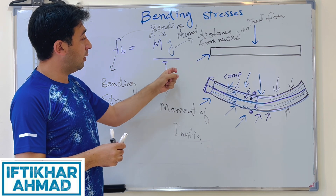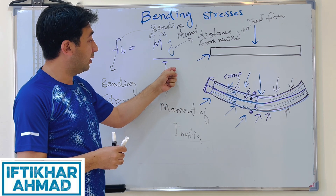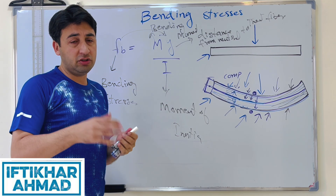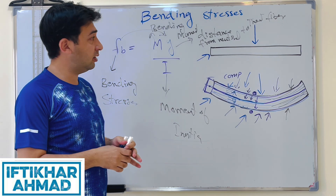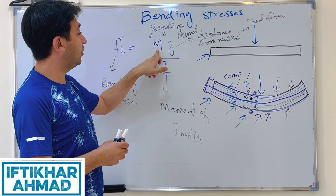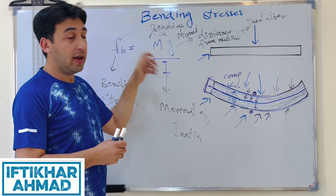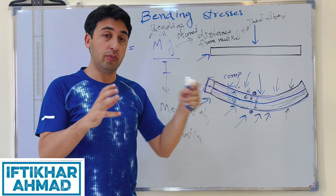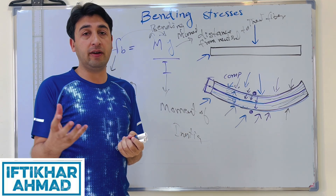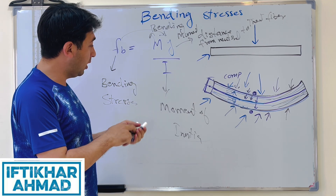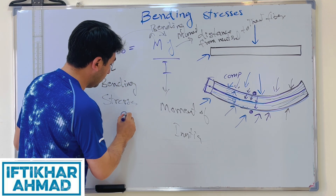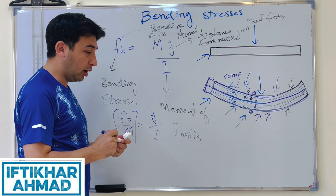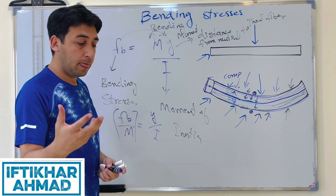If the bending moment is given and the cross-section is known, we can find the moment of inertia and the centroid to determine Y — the distance of the extreme fiber from the neutral axis — and then calculate the bending stresses. We can also rearrange the formula as fb / M = Y / I to help select a beam geometry.